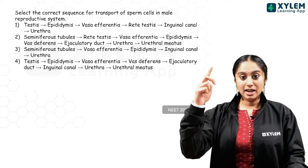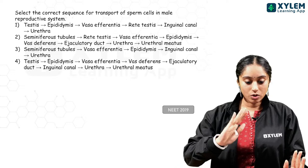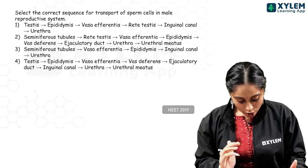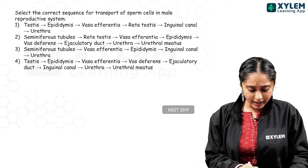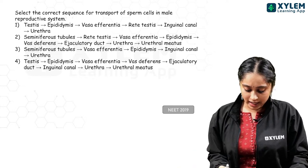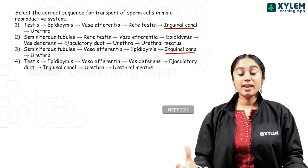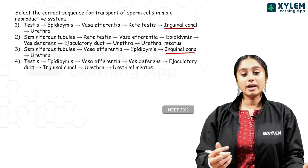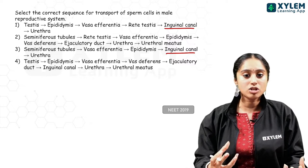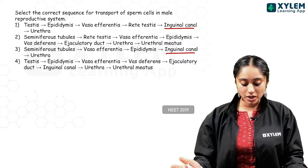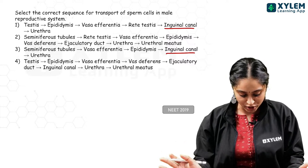In this question, you have to recall the full diagram. There are options — you have to look at two of them. The inguinal canal is nothing but helping the testes to descend into the scrotum. So, it is not part of the transport of sperm — we can eliminate both those options easily.